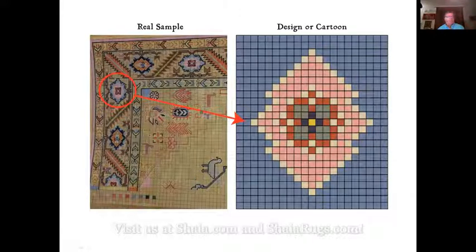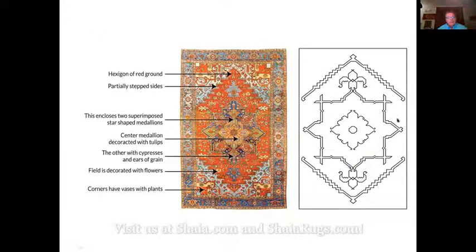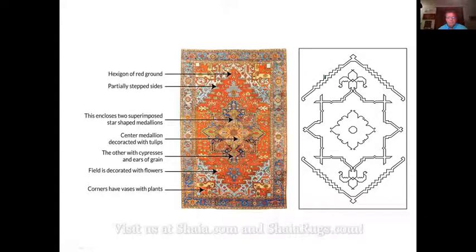They tell the weaver: I want 200 knots per square inch, this assortment of colors. If it's 500 knots per square inch, they might use linen for the warp and weft instead of wool or cotton, or they might use silk. This is a typical Heriz rug from Persia. Remember, if it was made in India we'd call it a Heriz design woven in India, but in this case it's a Heriz rug woven in Persia.